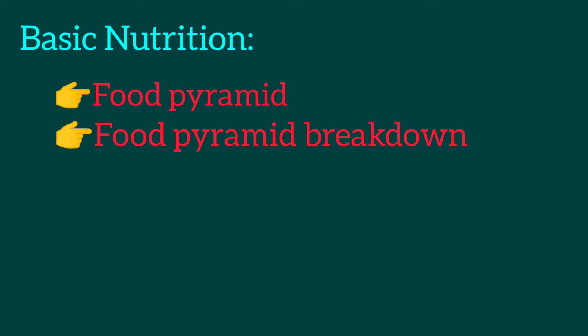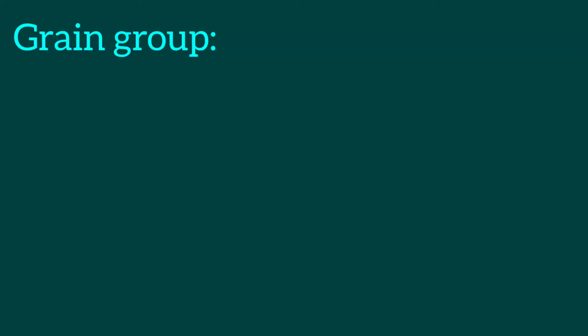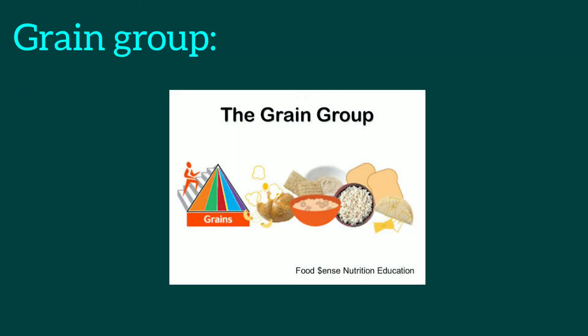First of all, we see the grain group: cereal, breads, crackers, and rice — supplies energy through carbohydrates, six to eleven servings daily. How can you get the right amount? Bread in a sandwich, cereal and oatmeal during breakfast, and rice with dinner.